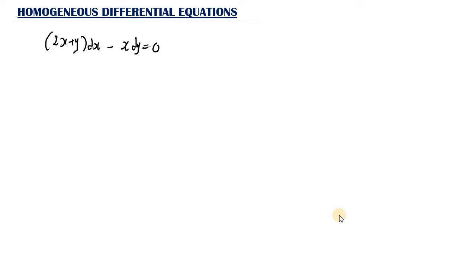What makes this a homogeneous ordinary differential equation? Notice that every term has the same degree. As you can see, 2s has a degree of 1, y has a degree of 1, and s has a degree of 1. So this is what we know as the first order degree.